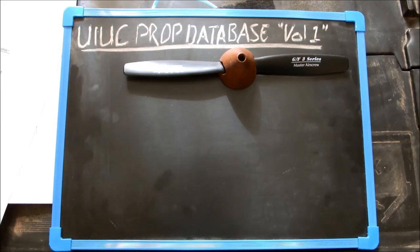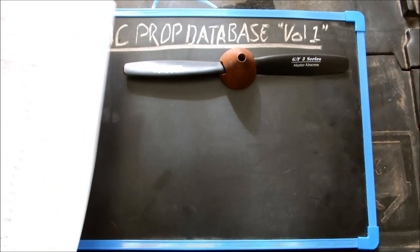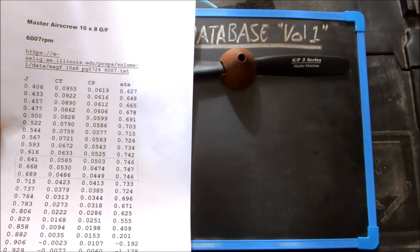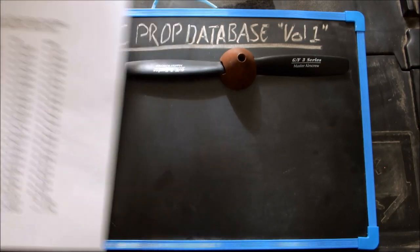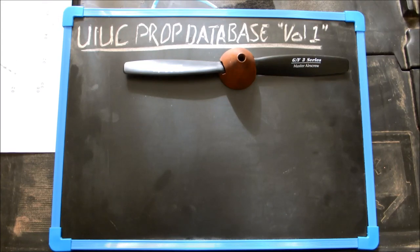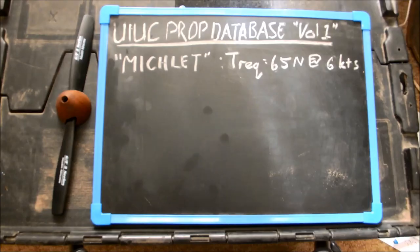The University of Illinois published wind tunnel test data for a range of model aircraft propellers. The propeller that I used was one of those being tested and I was able to get hold of a table for all the performance coefficients. I won't go into the equations and calculations in this video. I will leave that for a future video. I used a program called Michlett to calculate the thrust requirement of my kayak at different boat speeds.